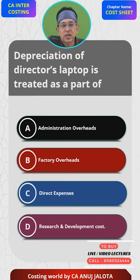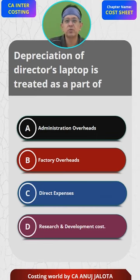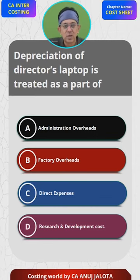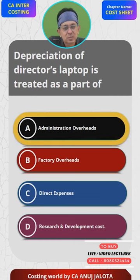So, depreciation of a director's laptop — the director will be there to manage the business. Therefore, this should be forming part of office overheads. Office overheads means administration overheads. So the correct answer is A.